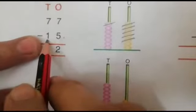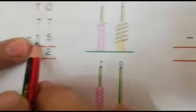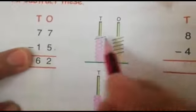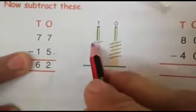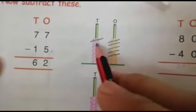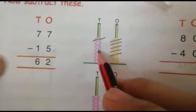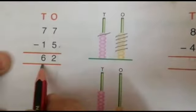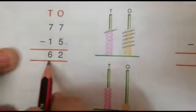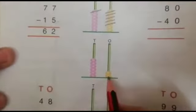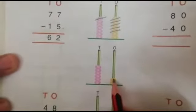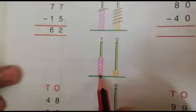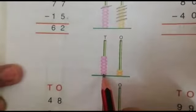And how many 10s we have to cut from 10s place? 1. How many are left? 1, 2, 3, 4, 5, 6. It is written there 6. We will draw 2 beads in 1s place and 6 beads in 10s place.